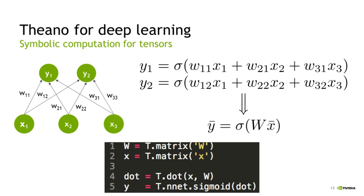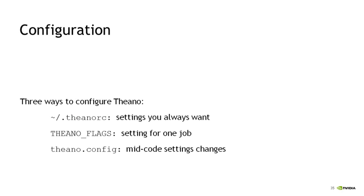When you're doing deep learning applications you need to use 32-bit floating point values. The three methods I mentioned for configuring Theano parameters can all be used. In the .theanorc file you can specify the parameter floatX to be float32, but you can also do so by passing it in at runtime or changing it mid-code.